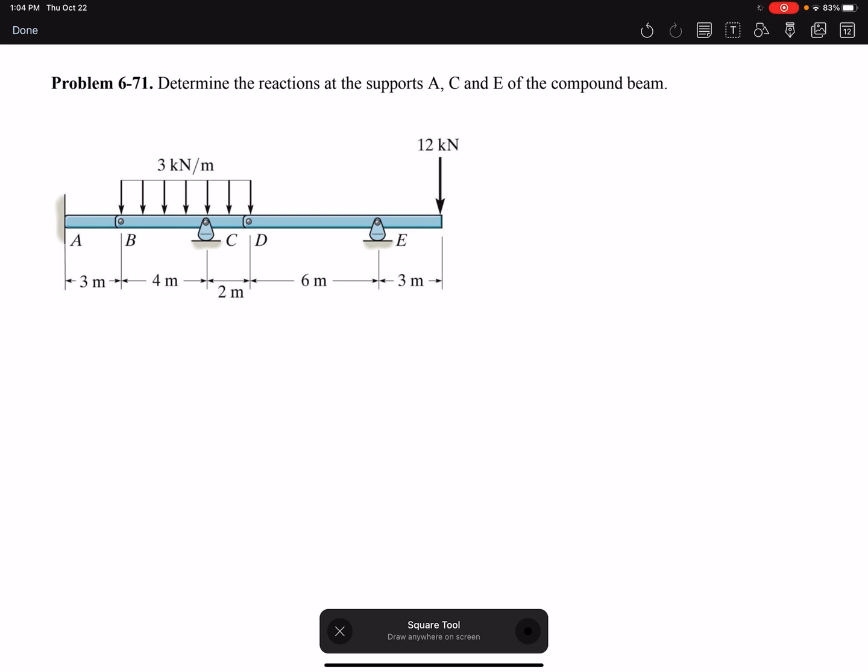So this beam has three members: member AB, BC, and member DE. So I need to draw three free-body diagrams. I need to draw three beams.